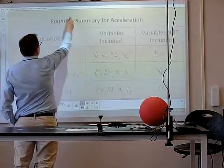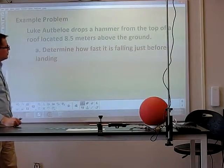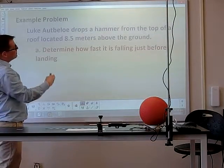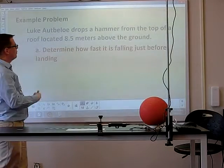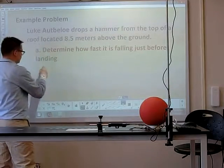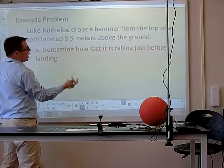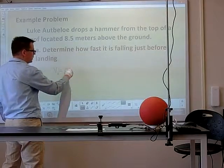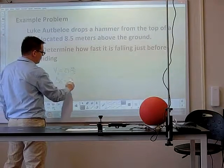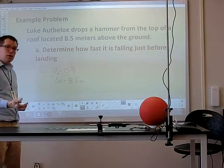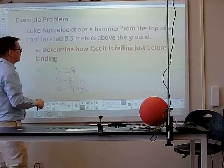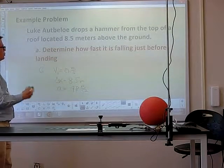So let's go ahead and try that with another problem now specifically dropping an object. So let's take a look. This example problem. Luke up below, yes, Luke up below drops a hammer from the top of a roof located 8.5 meters above the ground. Determine how fast it's falling just before landing. Well, we can start off by writing our given information. I'm going to put a G to remind me of the given. We are dropping the hammer. So the initial velocity of something that's dropped is often zero meters each second. The roof is located so it's got a distance or displacement of 8.5 meters above the ground. And it's just falling. So we can use now that acceleration that we found 9.8 meters each second squared.